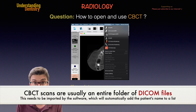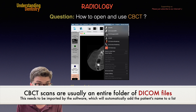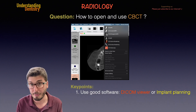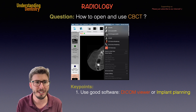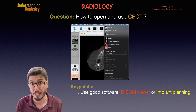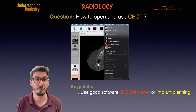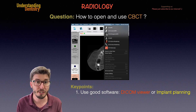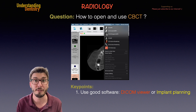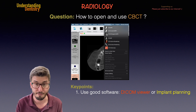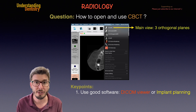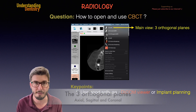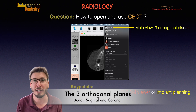Here we are seeing the interface of one of these viewers, and pretty much almost all of them have a similar interface. The first thing that they open is the axial slices — we are seeing the axial slices of a CBCT. Looking at the menu, the first option is the 3D MPR, which stands for multiplanar reconstruction. This is the main view for us to see the three orthogonal planes at the same time: the axial, sagittal, and coronal planes.